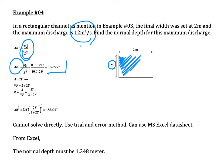Substituting into the Manning equation gives one equation with one unknown — but y appears in a complex location within the equation, making it difficult to solve algebraically. This is why the equation is not straightforward to solve directly.